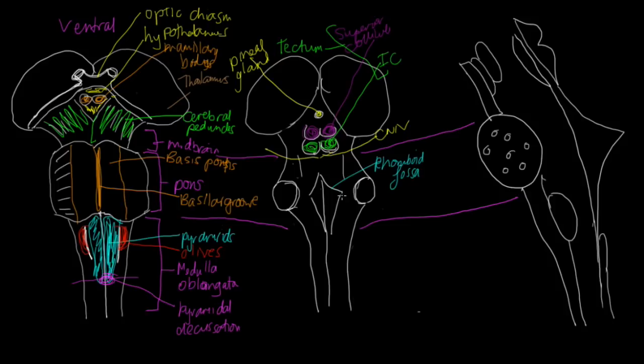Up this way we'll have the cerebral aqueduct, which we'll see in the sagittal section. Caudal to the rhomboid fossa, we'll have the central canal extending from the spinal cord through the medulla.